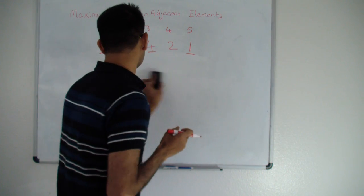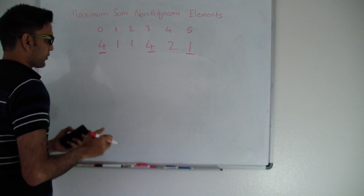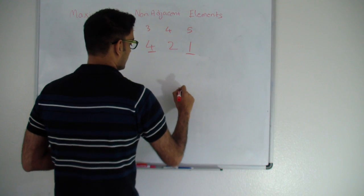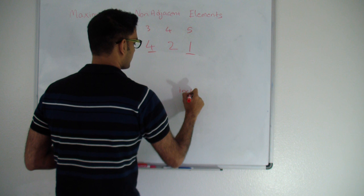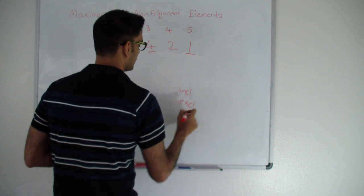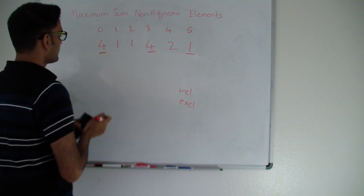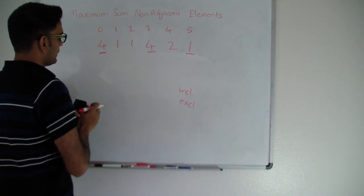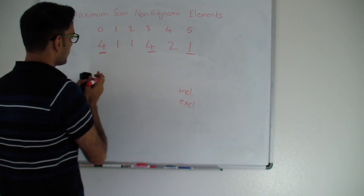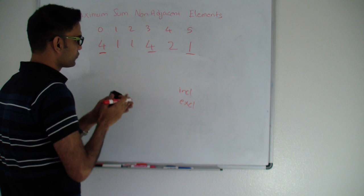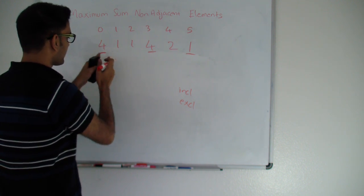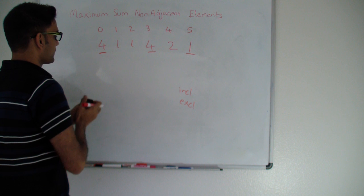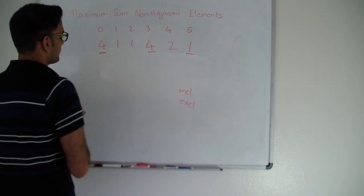So how do we solve this? We'll use dynamic programming. I'll have two numbers: inclusive and exclusive. Inclusive tells me, at a given point, what is the maximum sum I can achieve up to that point including that number. Exclusive tells me what is the maximum sum I can achieve up to that point excluding that number.